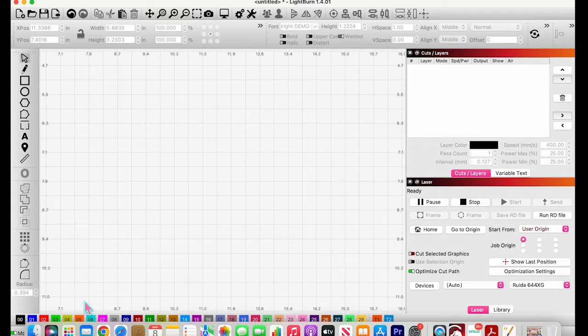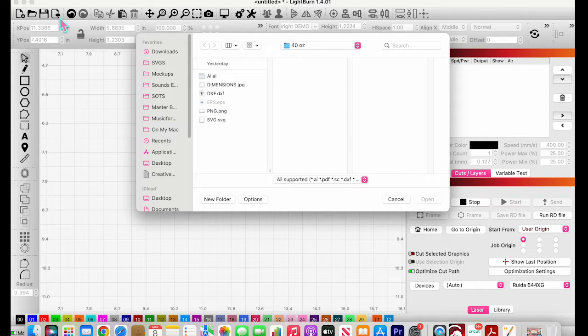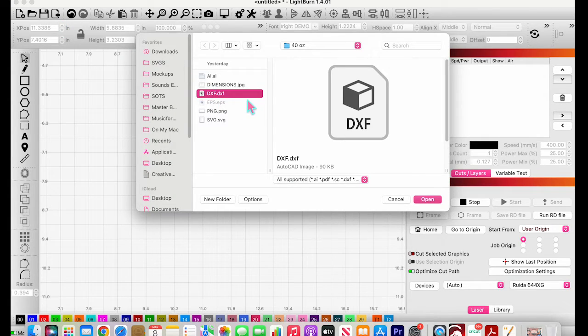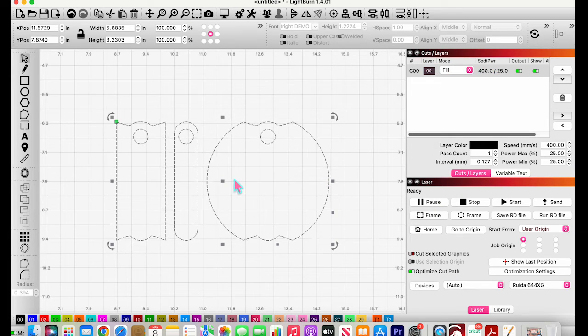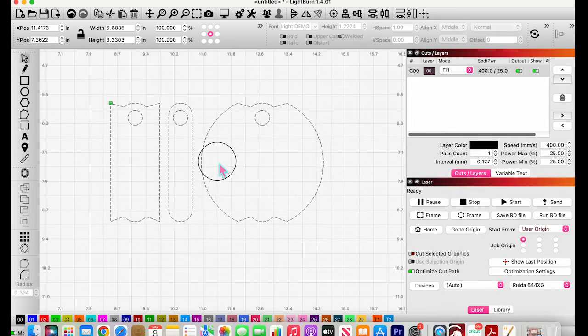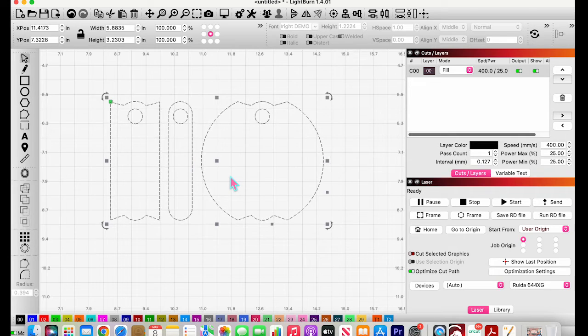Alright guys, so here we are in Lightburn, and I'm going to show you how to set up this project. So I'm going to go ahead and I'm going to open up the file for the Stanley nameplate. Now, if you want to get this file for yourself, I've linked in the description on this video where I got this file. I got it off Etsy, so you can get it yourself. It's actually a great file, works perfectly, and it comes with all different sizes for the Stanleys. And in each file, it also comes with three different design styles.